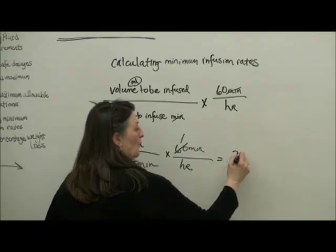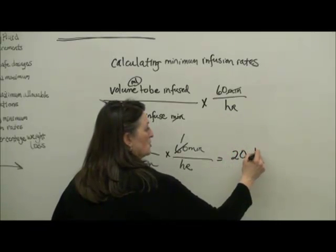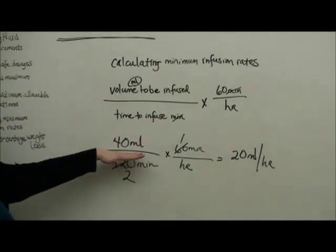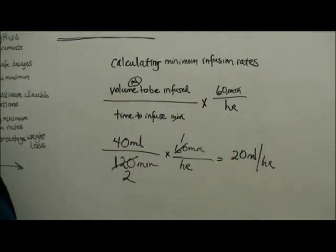This is going to go much slower. We're going to set that pump at 20 milliliters an hour, and then in a 2-hour period, we would infuse at 40 milliliters.